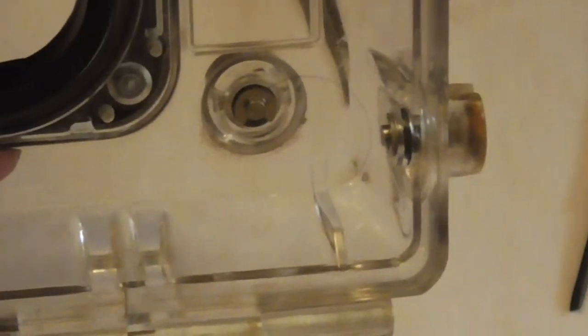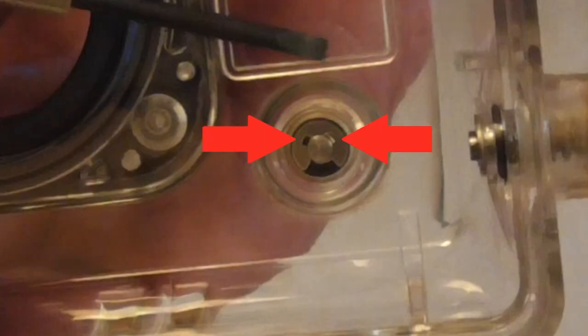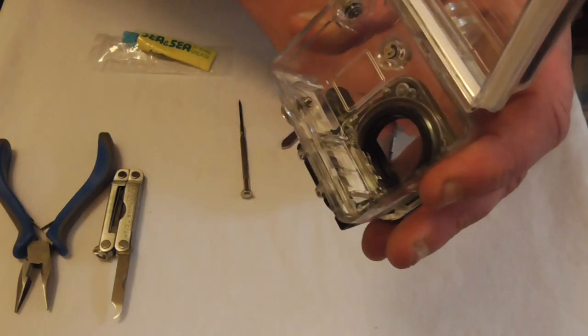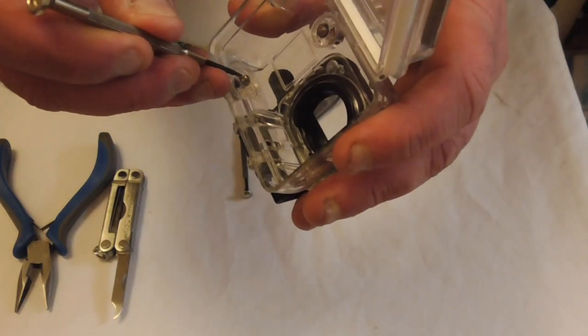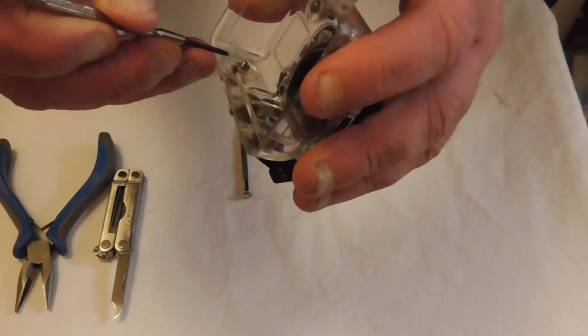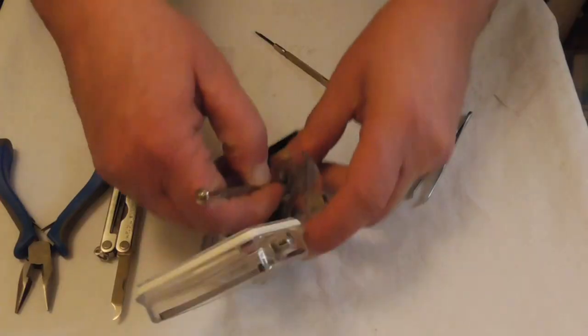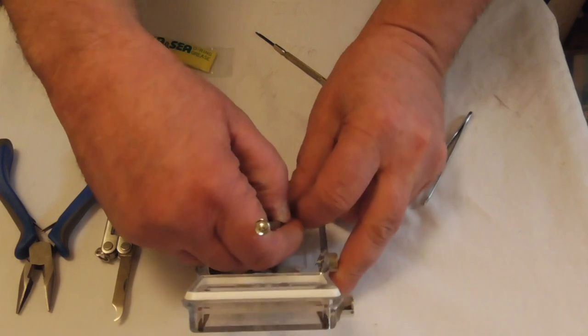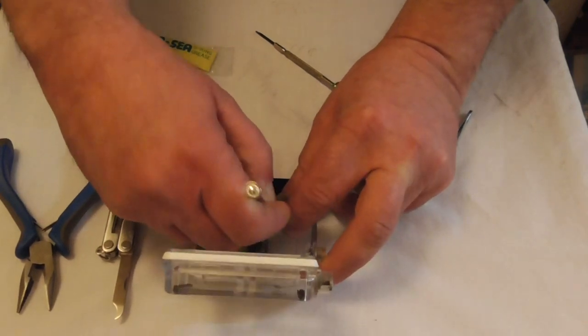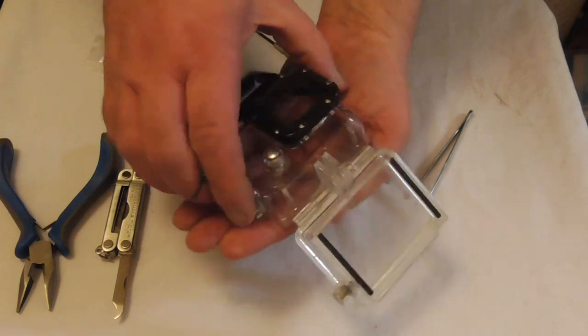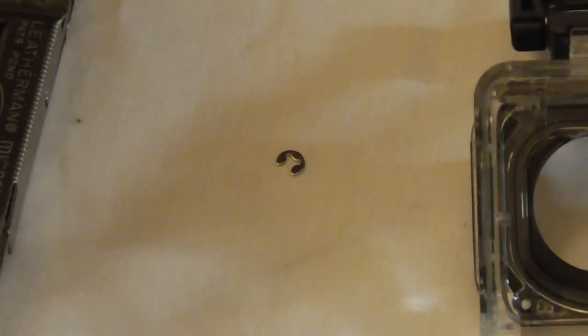Now we're going to be aiming for the two holes here with a precision screwdriver. Carefully lever out the e-clip. I always aim to push the clip into the body of the camera so that if it does fly off it's actually going to be going in where I can find it. Then a quick tap on the hand and there we are - one very small e-clip.